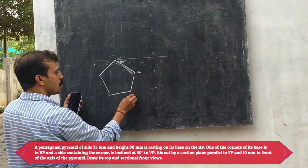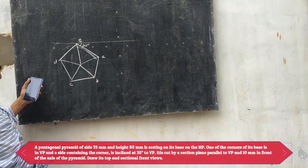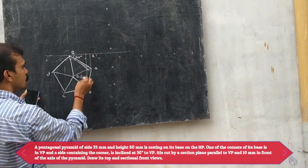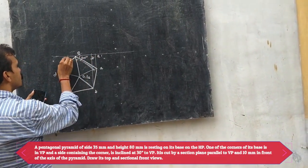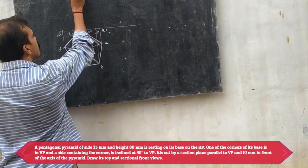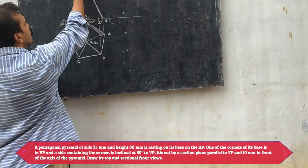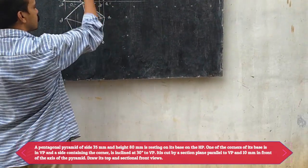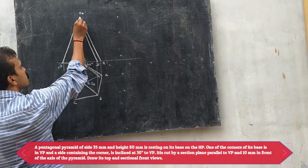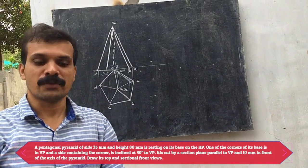This is the pentagon, with vertices A, B, C, D, E. As this is a pentagonal pyramid, we can obtain the apex O. In the front view, this is A dash, B dash, C dash, D dash, E dash, and at the height of 60mm we can obtain the corresponding apex O dash. This edge will be visible, this edge also will be visible, this edge will be visible. So the top view and the front view have been completed.